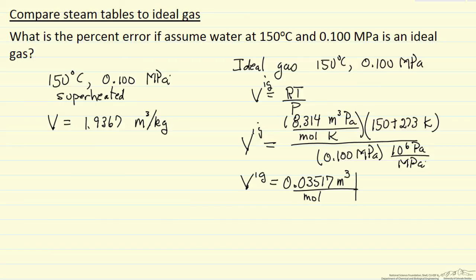So we have to do the conversion, 18 grams per mole, and then 10 to the third grams per kilogram. Now we have units of cubic meters per kilogram, 1.954 cubic meters per kilogram, so that is the value for ideal gas, pretty close.